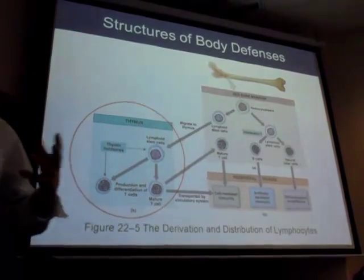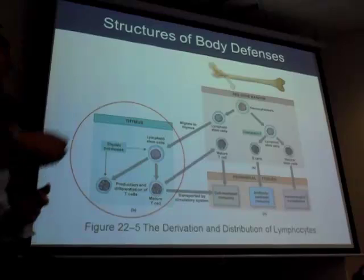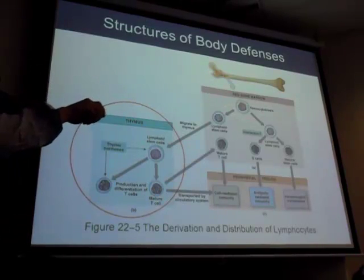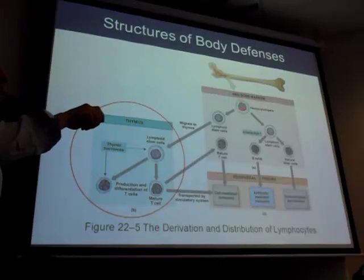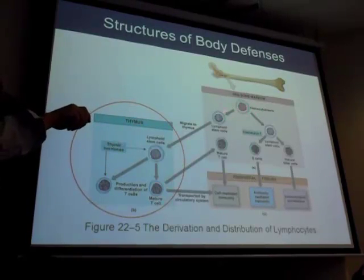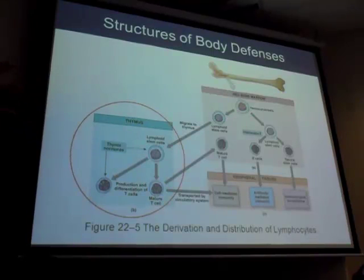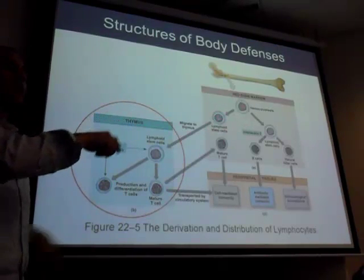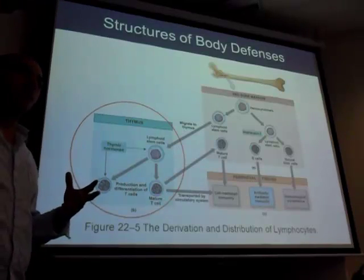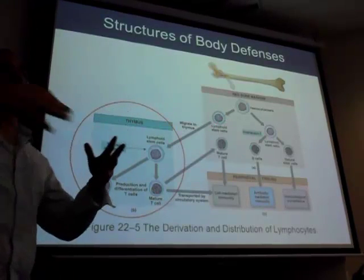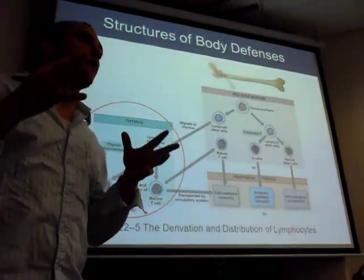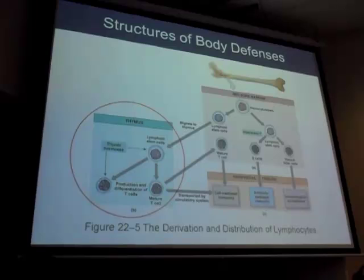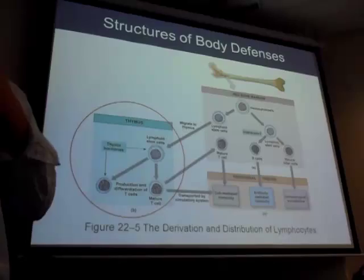All blood cells start in the bone marrow as hemocytoblasts, which differentiate into lymphoid cells. The lymphoid cell travels through blood to reside in the thymus — the gland on top of the heart, different from the thyroid near the neck. The thymus is gone by age 13 when it atrophies. By then, most T cell differentiation has already occurred. They're called T cells because they differentiate inside the thymus.